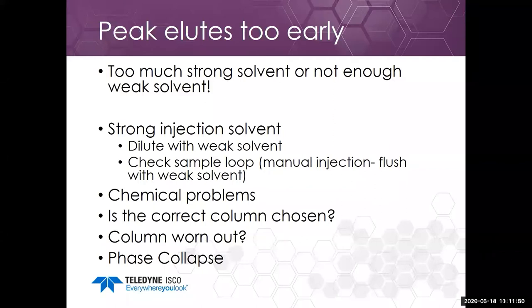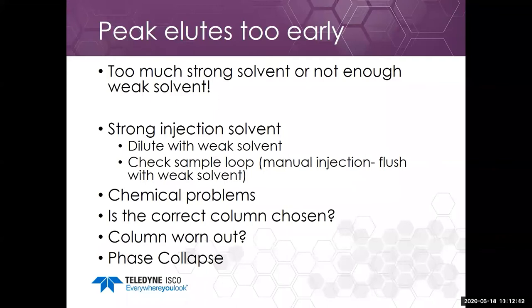Another issue is whether the correct column was chosen. There was one time I ran something and the compound eluted very early — it turned out someone had replaced my C18 column with a silica column on a prep-LC system. While it's okay to run acetonitrile and water on a silica column for very polar compounds, it doesn't work well when trying to run it as C18. Also, columns can get worn out; prep columns take more of a beating than analytical columns, used with buffers and modifiers.